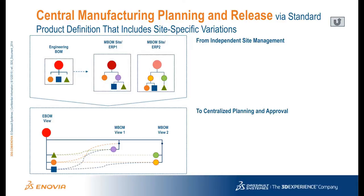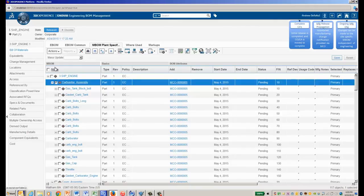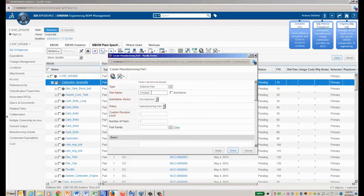For instance, notice how the two views of the MBOM in the lower diagram are directly referencing different parts in the eBOM. This can be done with confidence because we know that engineering has approved which parts manufacturing can select when the eBOM was released, and the eBOM and the MBOMs are interrelated to facilitate cross-functional reviews. When the eBOM is released, site-specific MBOMs or MBOM changes with site-specific manufacturing change order processes are created automatically.